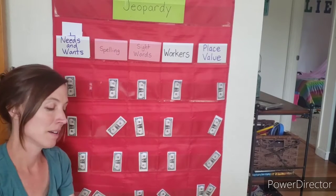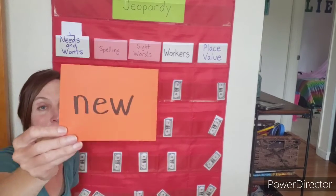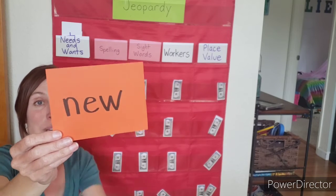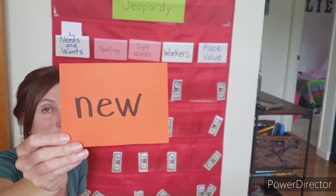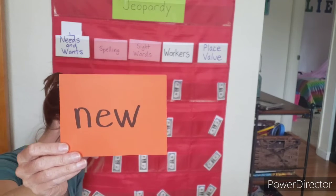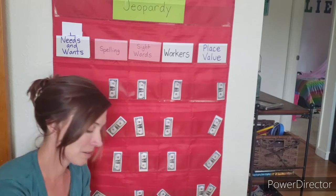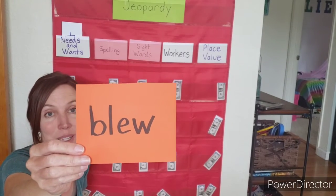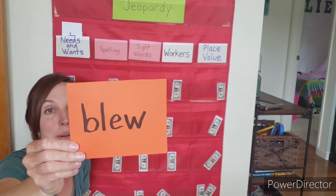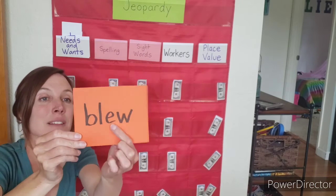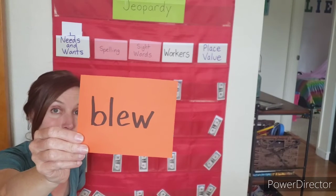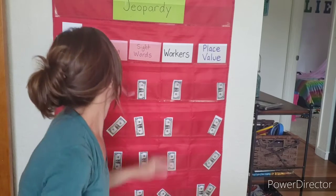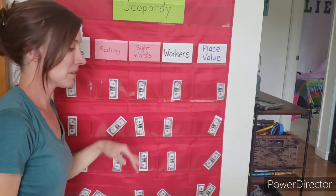What about this word? New — remember this one has 'ew'. Next word: blue, like the wind blew, and this one also has 'ew'. That's it for all of those categories.